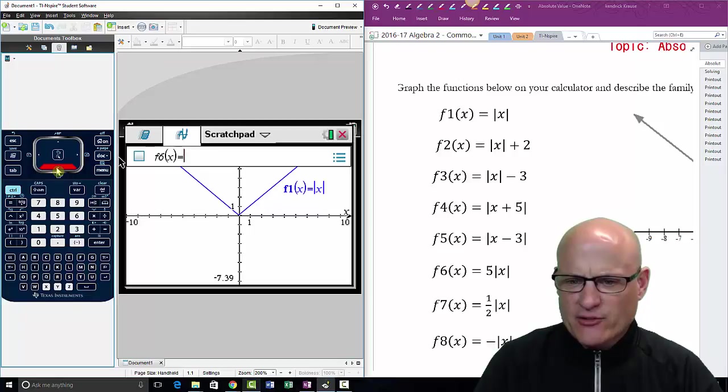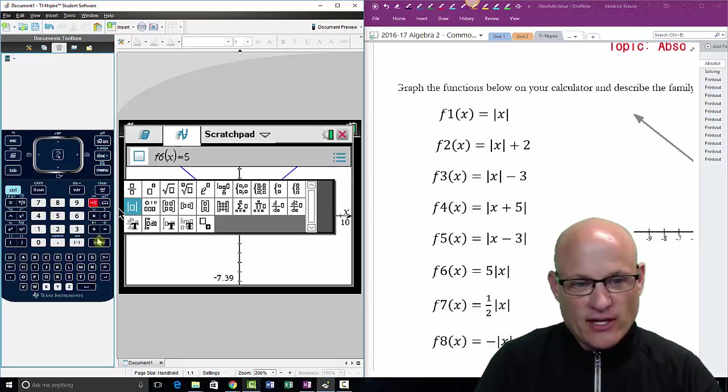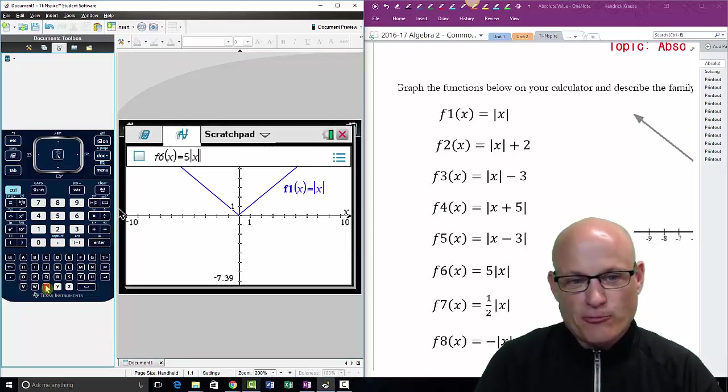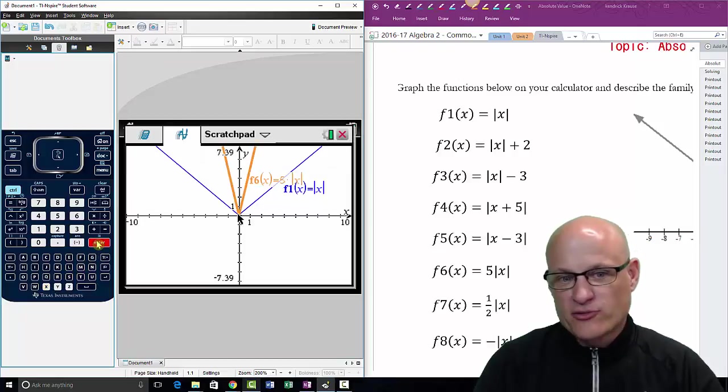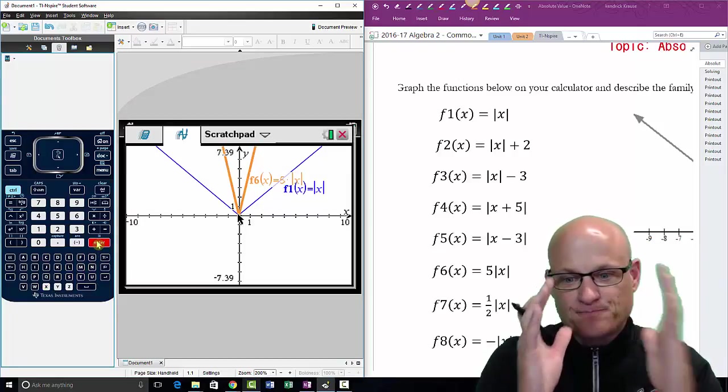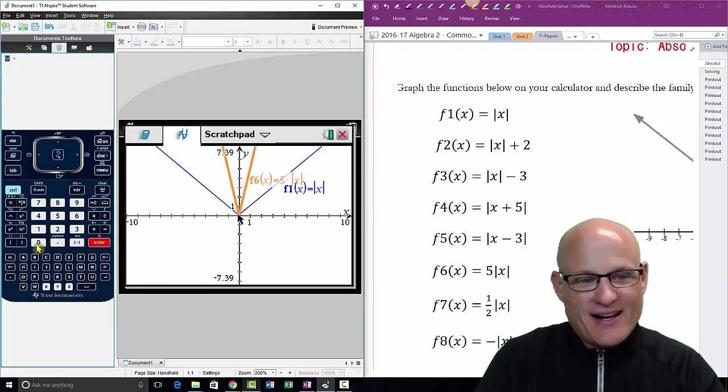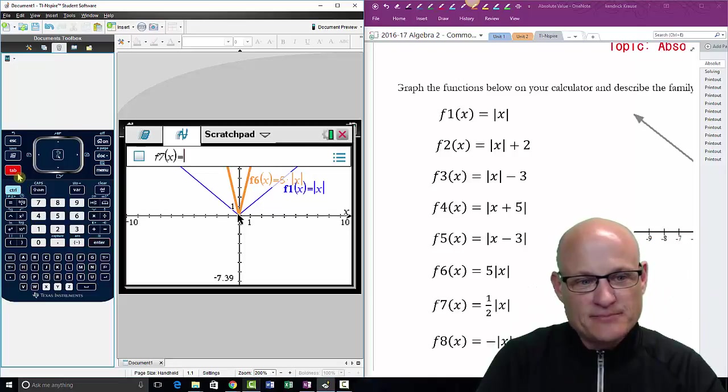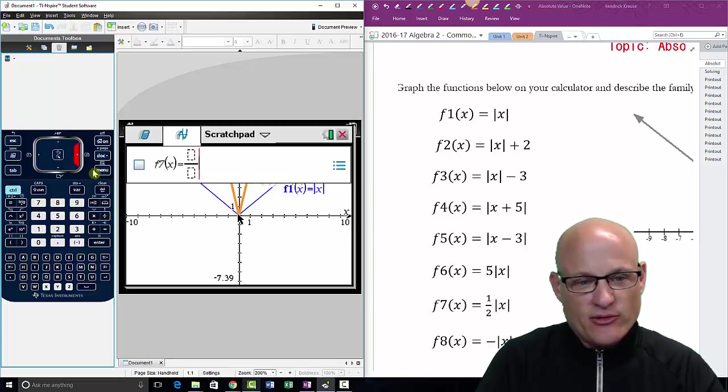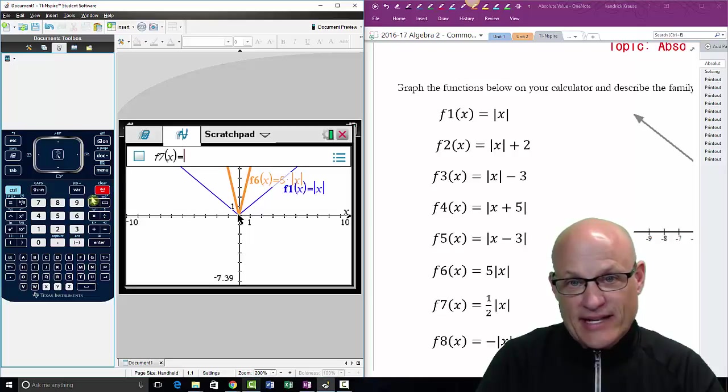And let's do f6. F6 just says 5 of X. Now go back, here's the original blue function. Now we're going to go 5 absolute value of X. And this should come as no surprise to you what's going to happen here. Just going to get really skinny, really steep. And it should come as no surprise to you that when I hit the tab button and I do, by the way, to get a fraction on this calculator you hit control division.